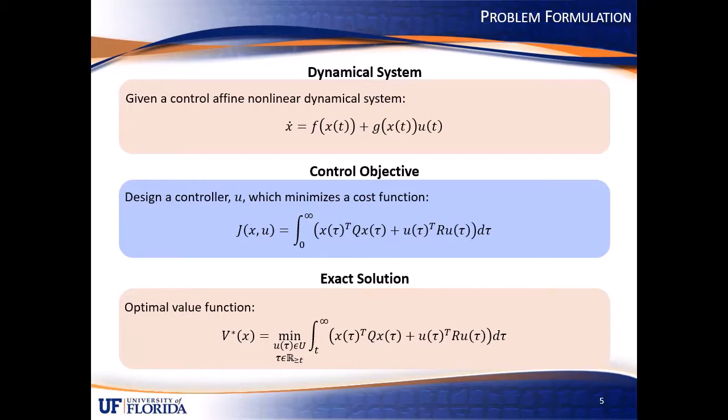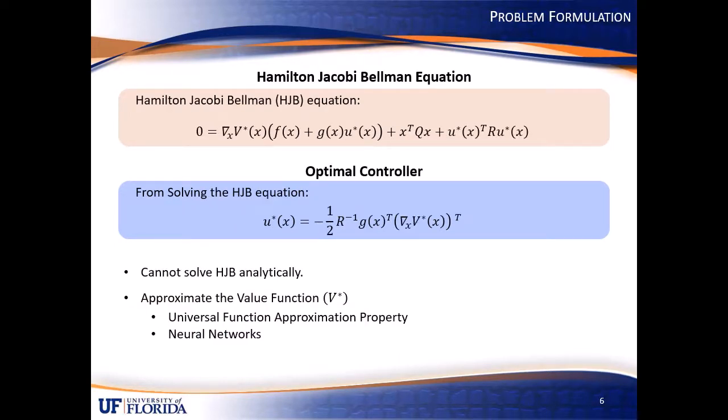The infinite horizon cost function J can be generalized as the infinite horizon cost to go problem from some point in time t to infinity. Evaluating the integral of the value function V star yields the Hamilton-Jacobi-Bellman equation, which gives an optimal control condition.